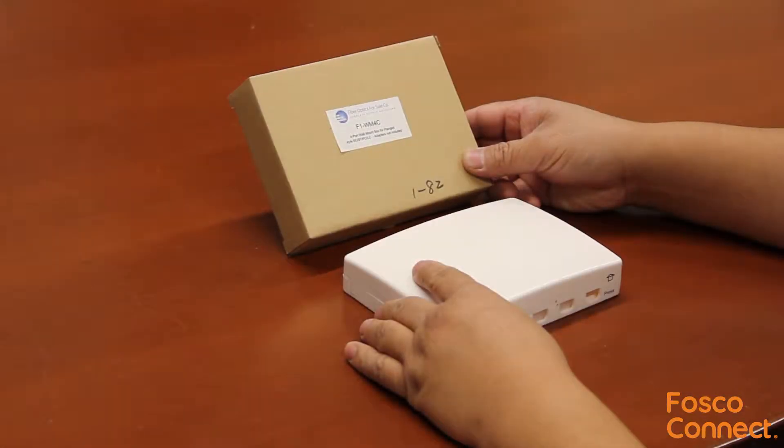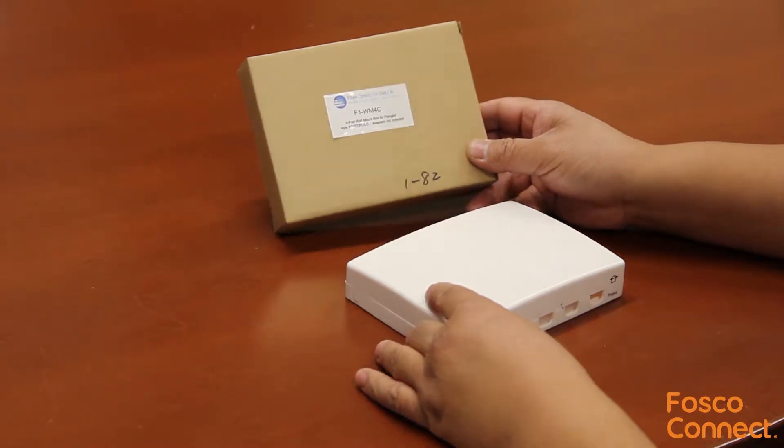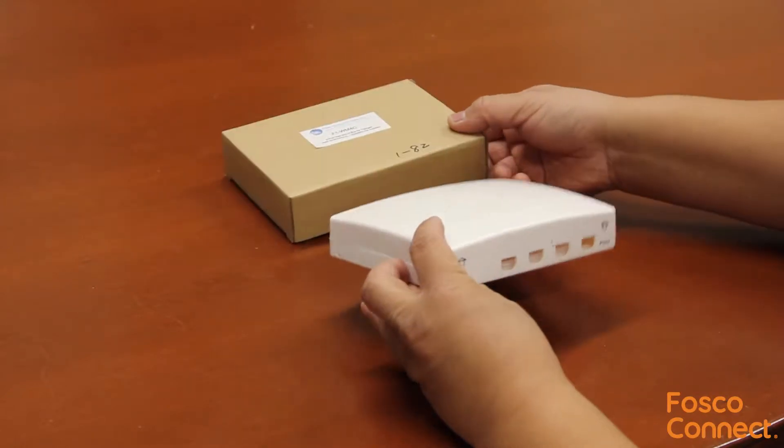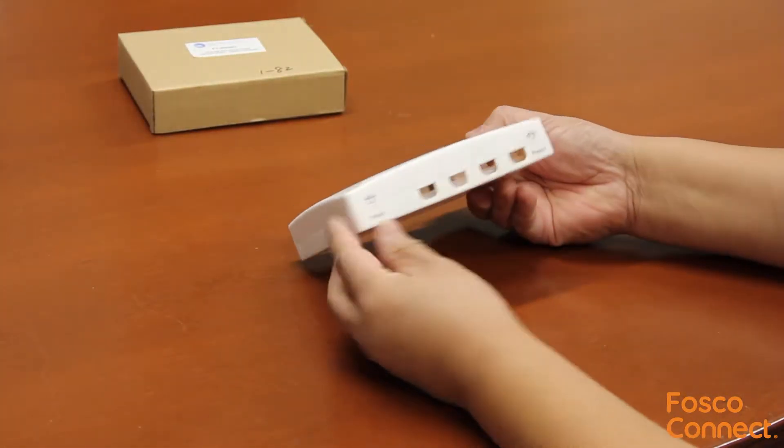This is the part number F1-WM4C. It is a 4-port compact size wall mount enclosure for SC, ST, FC, LC adapters. The adapters are not included. You have to order it from FiberOpticsForSell.com separately.